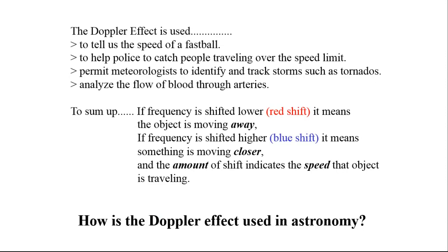The Doppler Effect is used to tell us the speed of a fastball, to help police catch people traveling over the speed limit, permit meteorologists to identify and track storms such as tornadoes, and analyze the flow of blood through arteries.